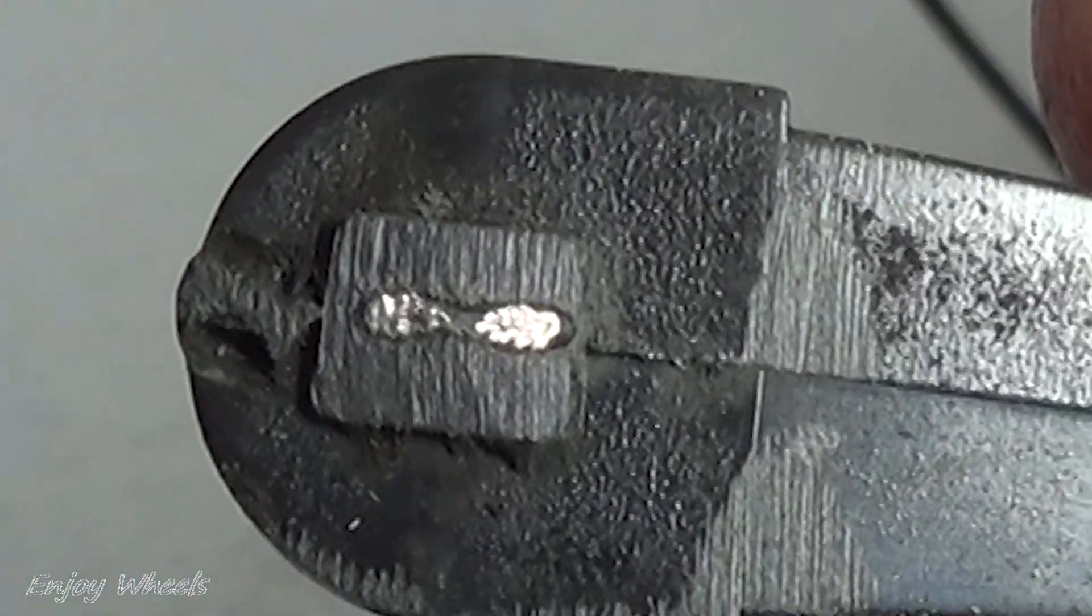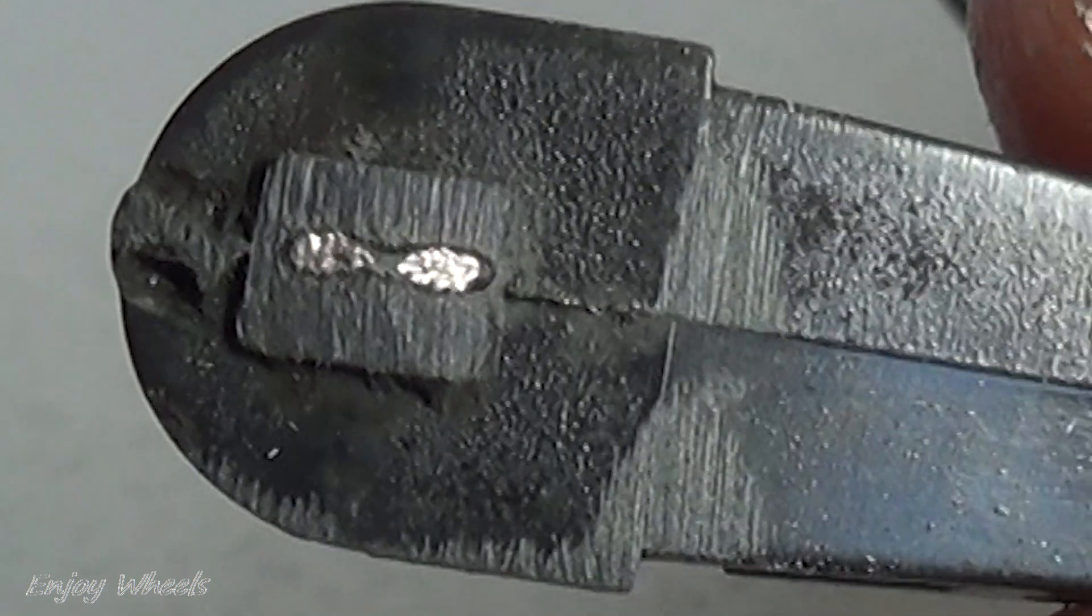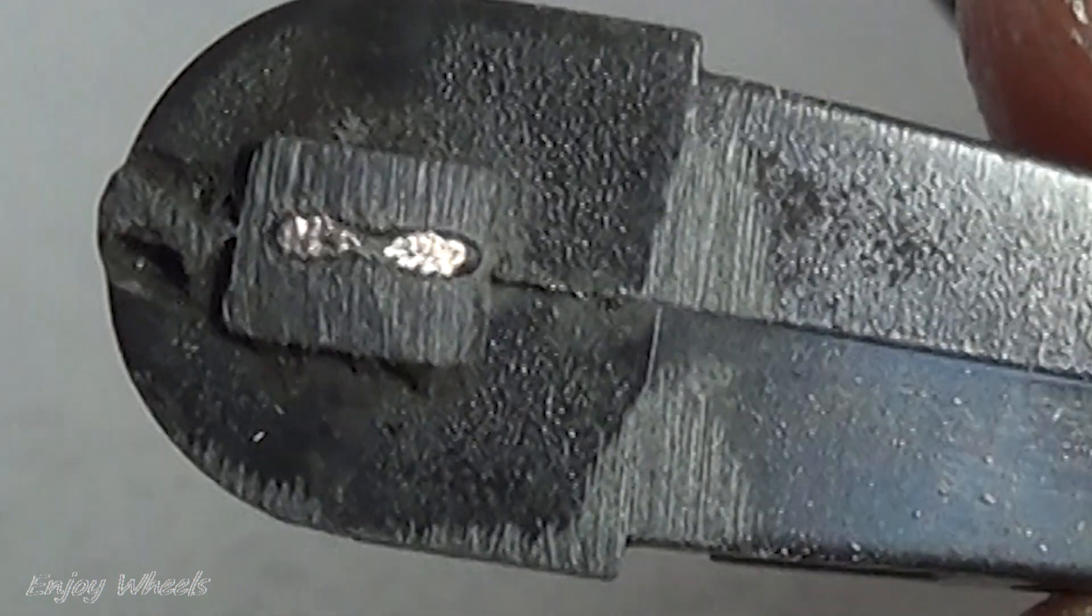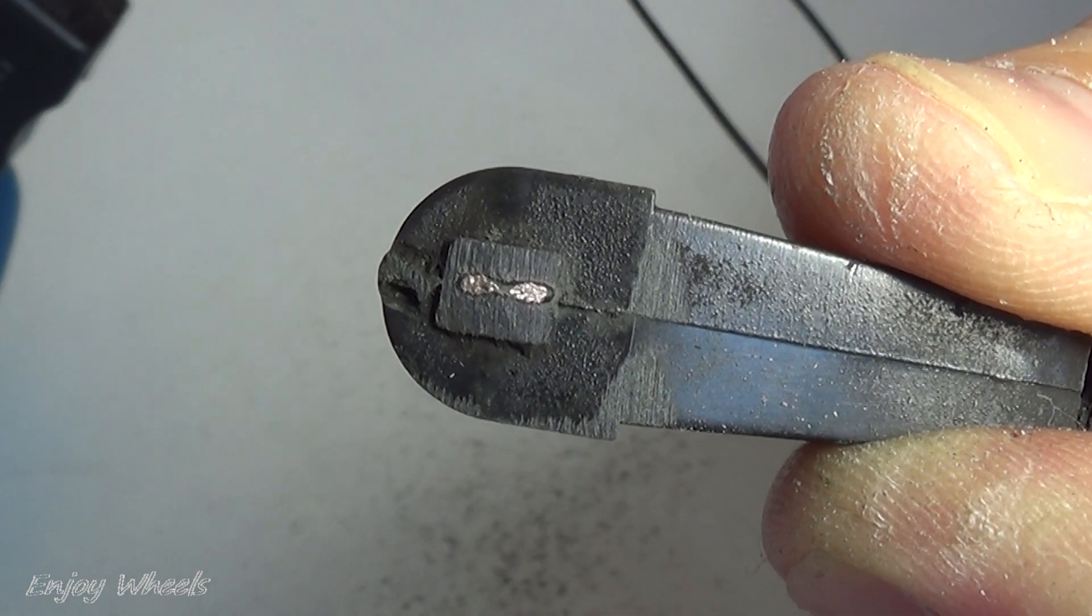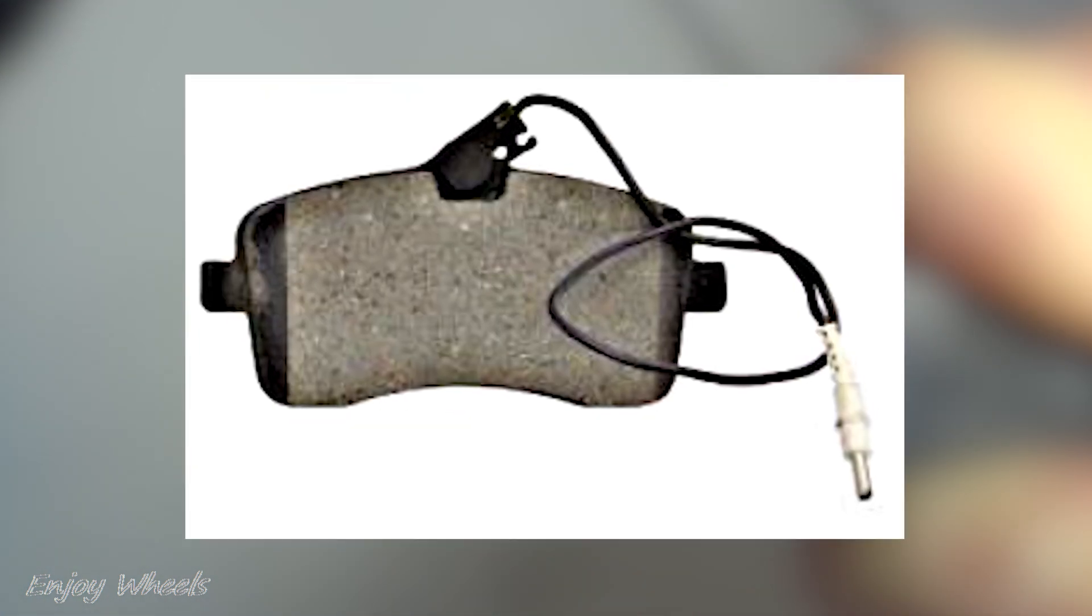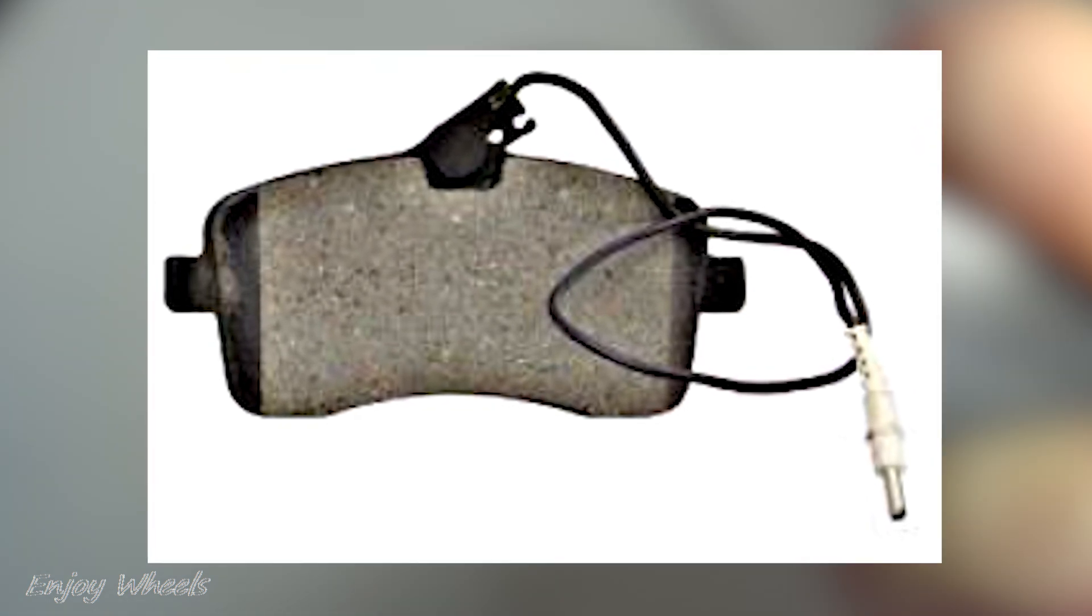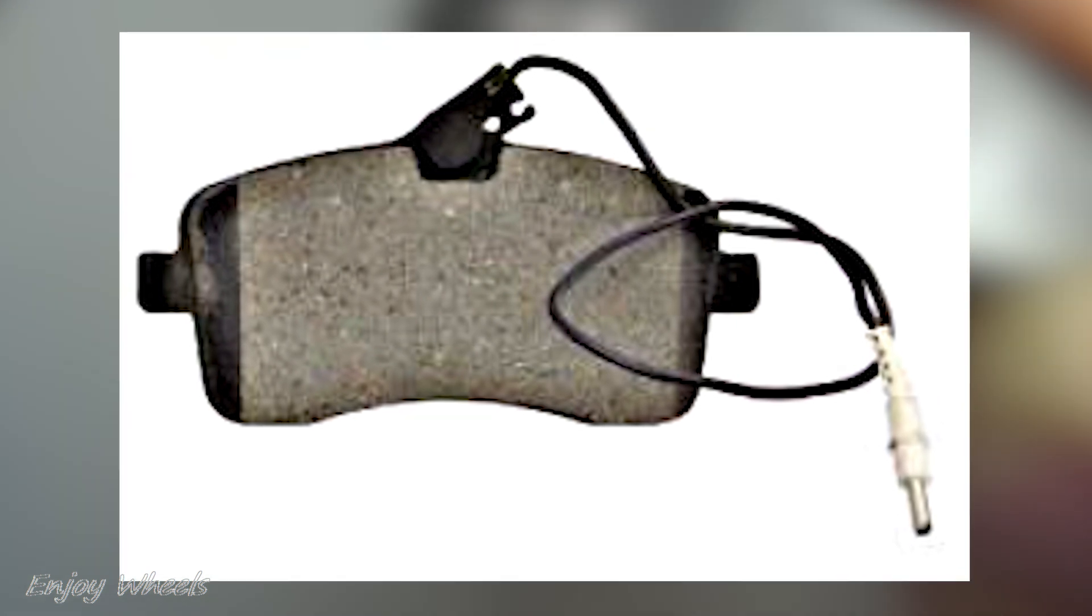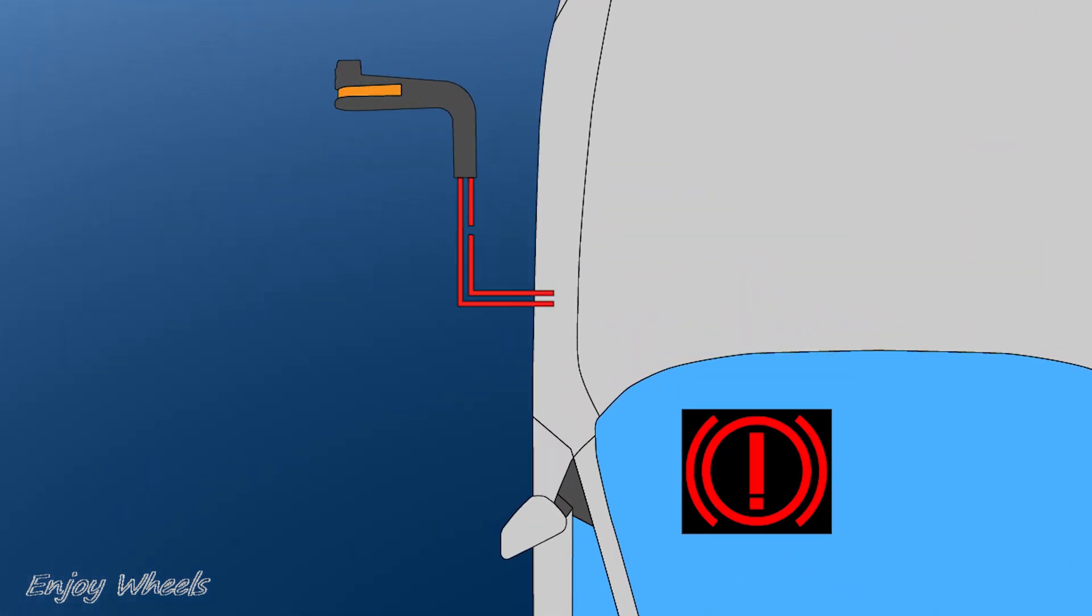Basically on this type of indicator, the contact between the two wires is no longer made when the pads are worn. But beware, on other cars the brake pad wear indicators are different. They have only one wire and the behavior is reversed. There is contact between the brake pad wear indicator wire and the disc when the pad is worn. Usually these are pads with the contact melted in the brake lining.